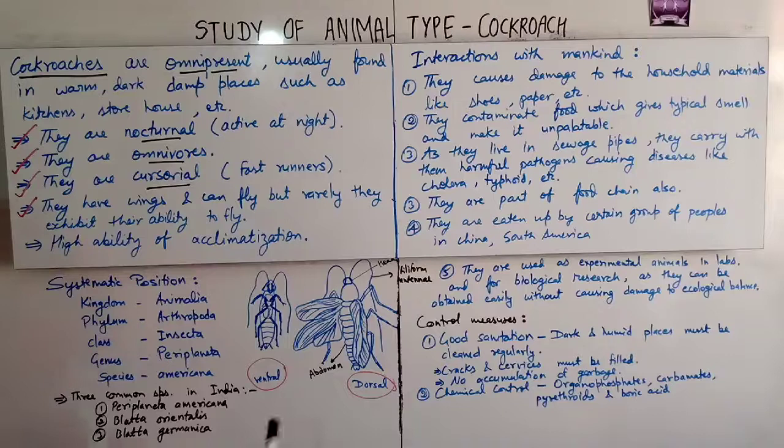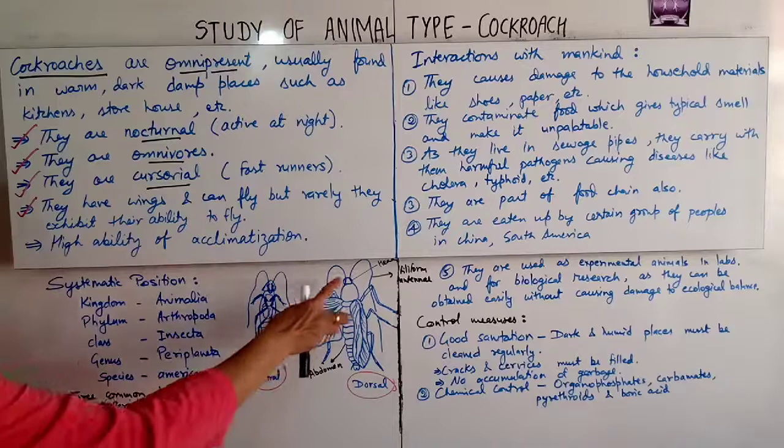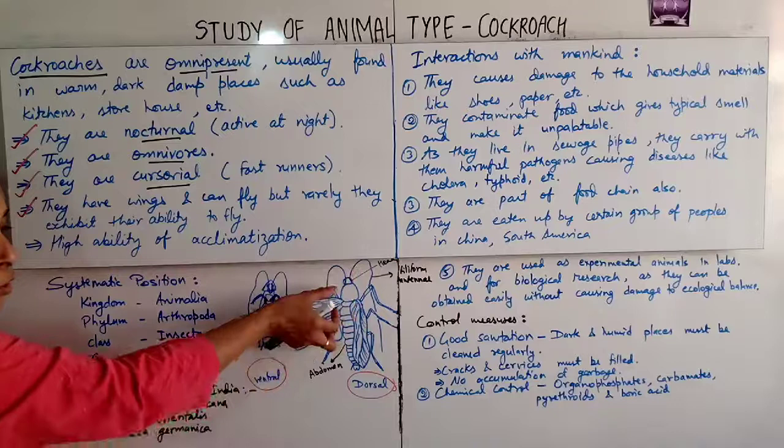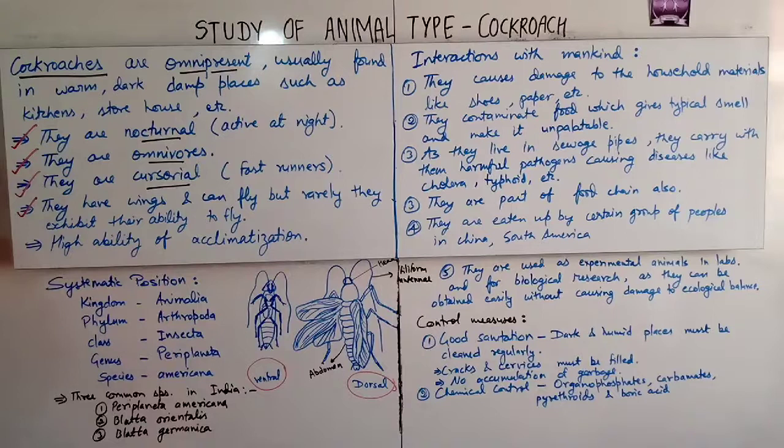The whole body of the cockroach is divided into three parts: head, thorax, and abdomen. Now, about the systematic position — the classification of the cockroach.